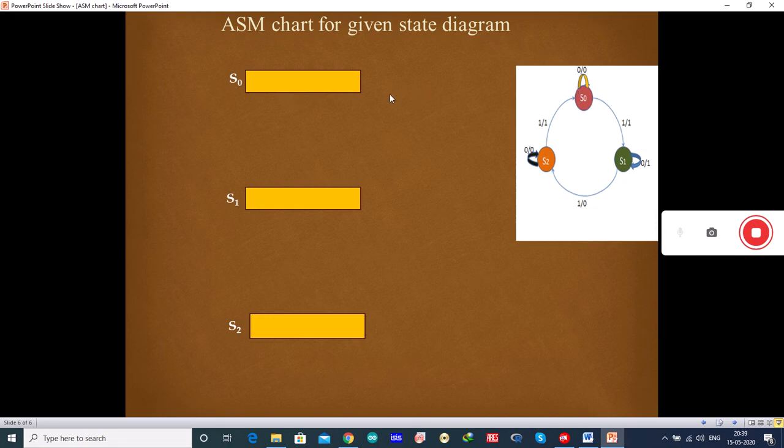Now, here you see we need to first draw the decision box and it has input X and S0 has a decision box and now if you see when the input is 0 and the output is 0, it is going to the same state. So, when the input is 0, it is going to the same state and when the input is 1, you also have the output as 1. So, if you have the output as 1, you need to draw the condition box. So, when you have the input 1, you will draw the condition box.